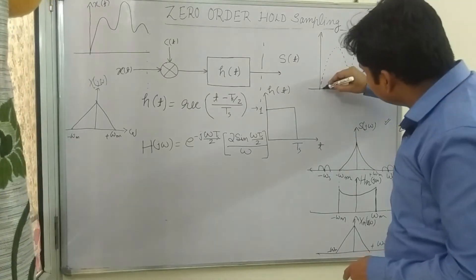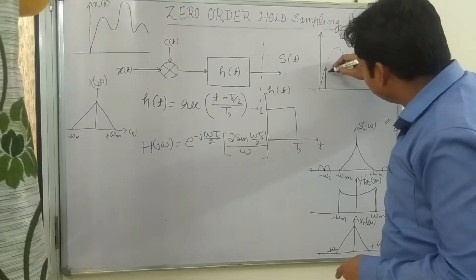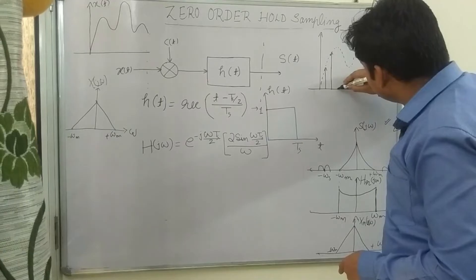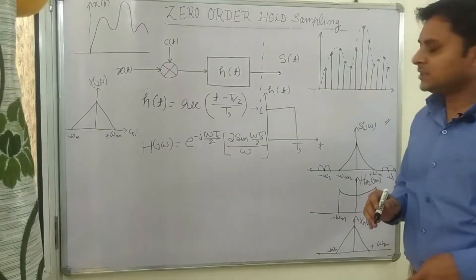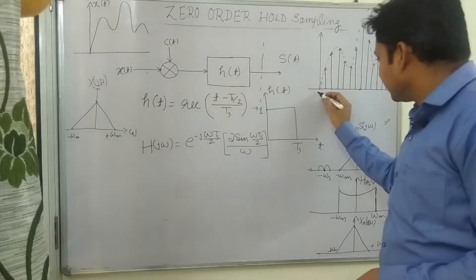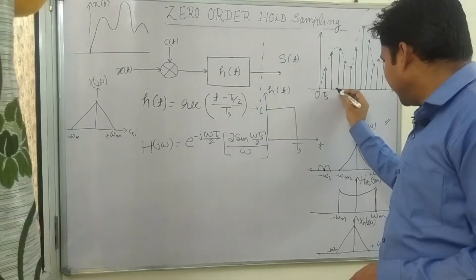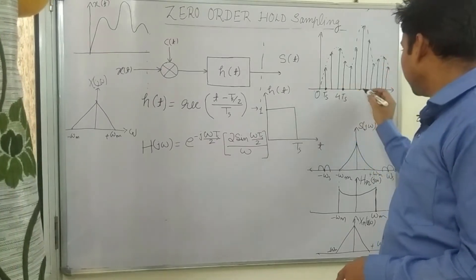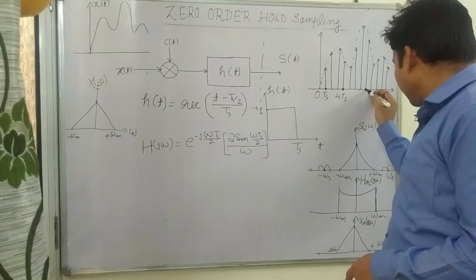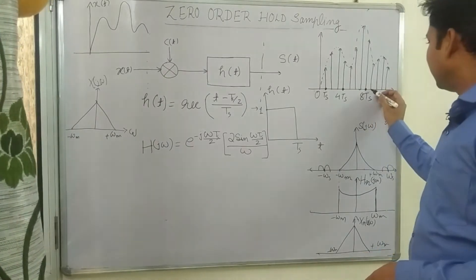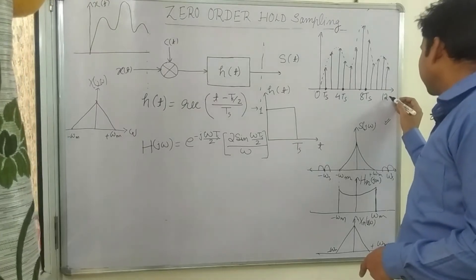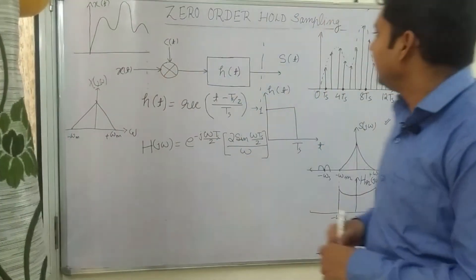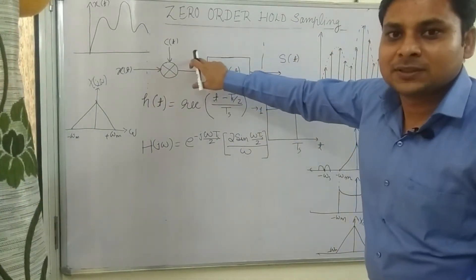Within the sampling period T_s, we get impulses. You can see these impulses at 0, T_s, 2T_s, 3T_s, 4T_s, and so on up to 12T_s. After this step we obtain the sampled impulse function.